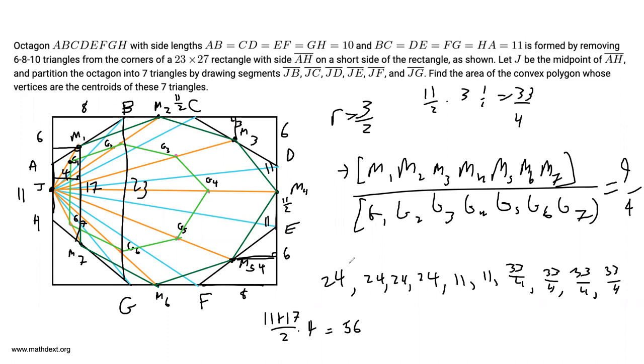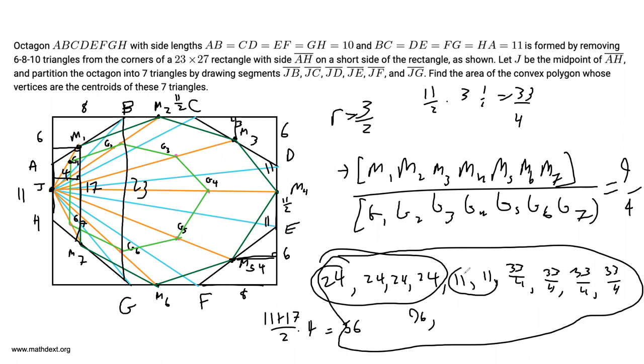So the combined area of all the stuff we're taking away is the sum of all this stuff, which we can calculate. These four sum up to 96. These two to 22. These four sum up to 33. And we have to add 56. So when we add up all of this area, we end up with 118 plus 151, 207. We end up with 207. So the area of M1, M2, M3, M4, M5, M6, M7 is the area of the big rectangle minus 207. The area of the big rectangle is 23 times 27, which is equal to 621. So this area is 621 minus 207, which is equal to 414.